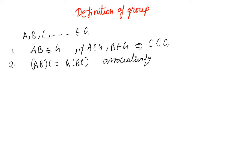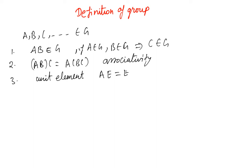The third condition is the existence of a unit element. If e is the unit element, then a·e equals e·a equals a. The product of any element with the unit element, or the unit element with any element, should give back the original element.